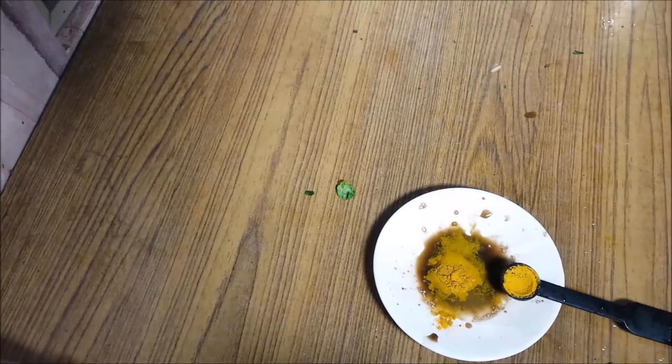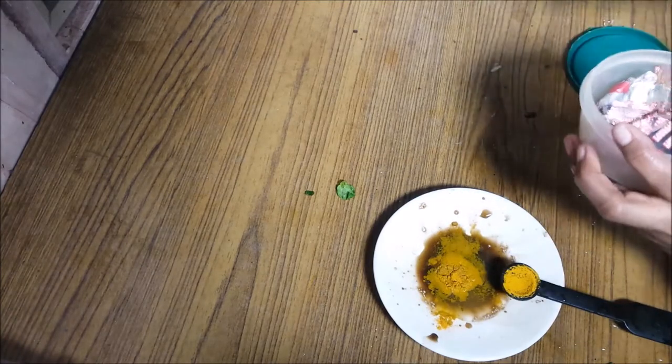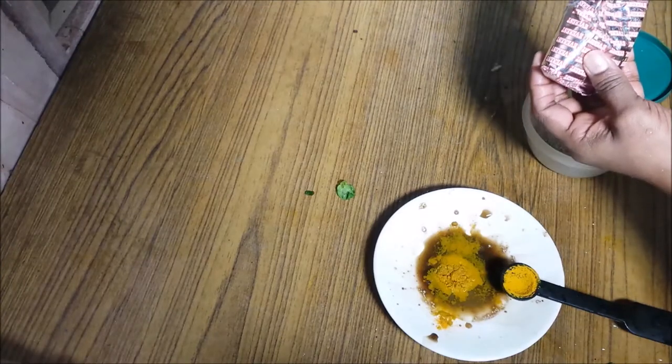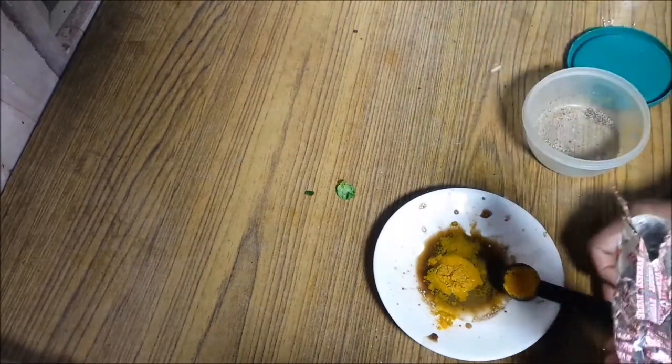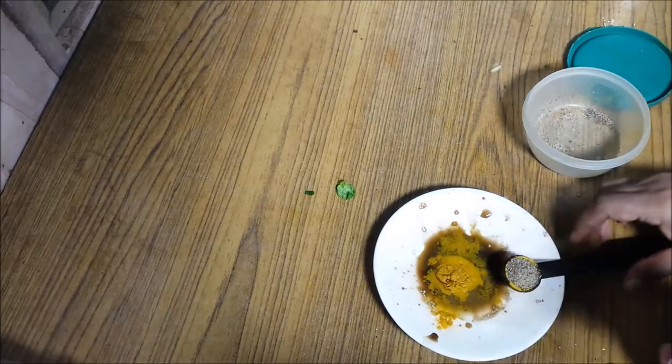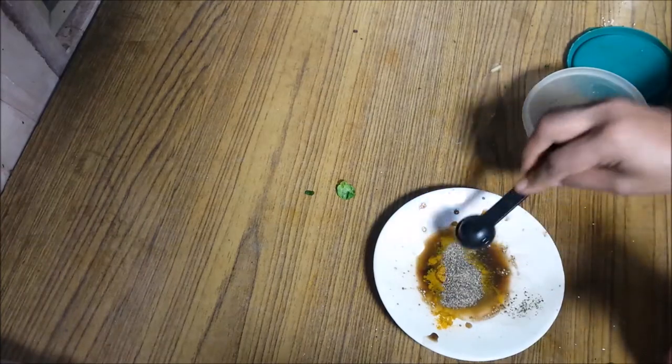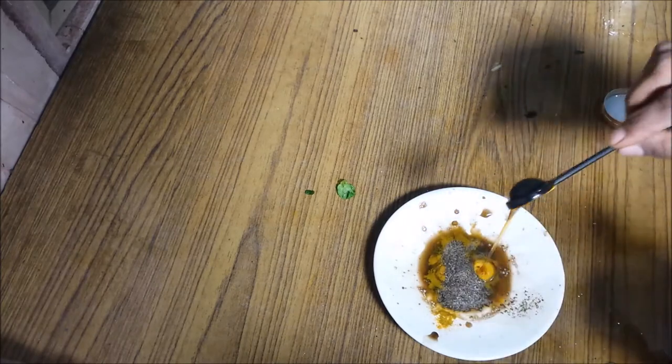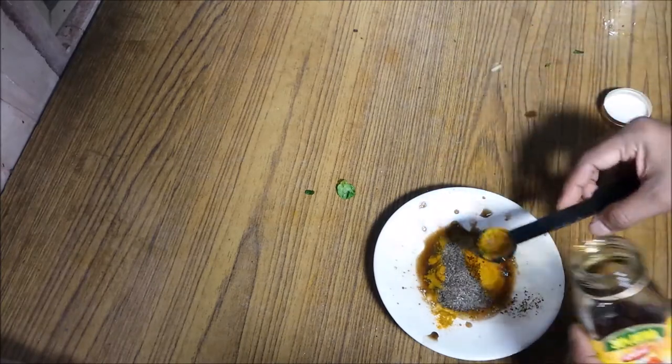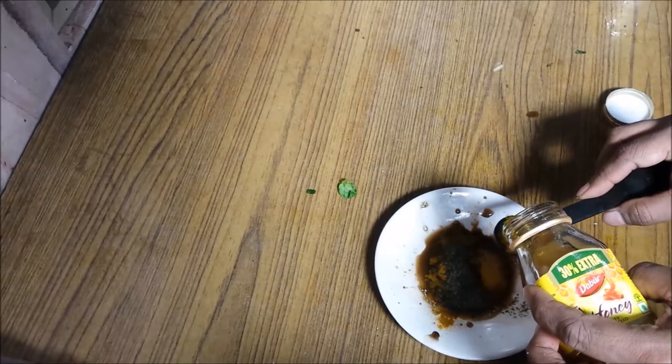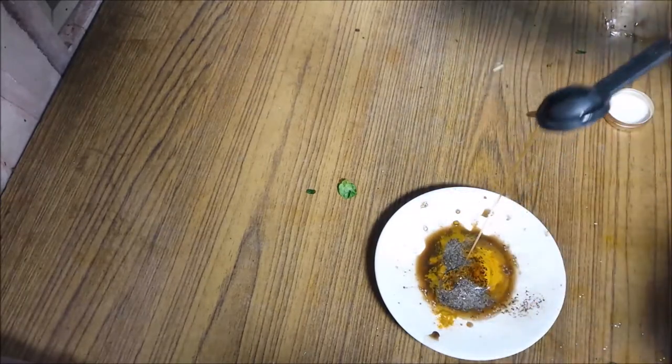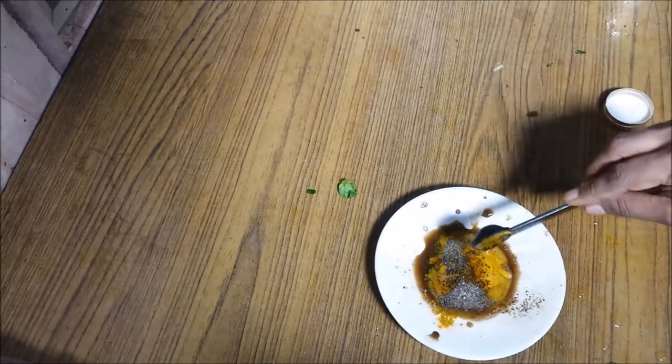And then I need pepper powder. So I don't have freshly ground pepper powder, so I am adding this pepper powder. Half teaspoon of pepper powder. Measurement. One more. One teaspoon of honey.